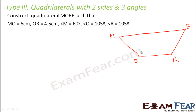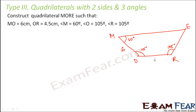In the rough sketch: angle O = 105°, angle R = 105°, angle M = 60°, side MO = 6 cm, and OR = 4.5 cm. These are the values that are given to us.